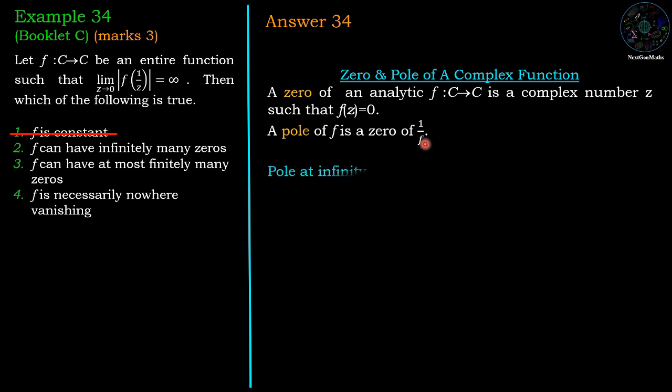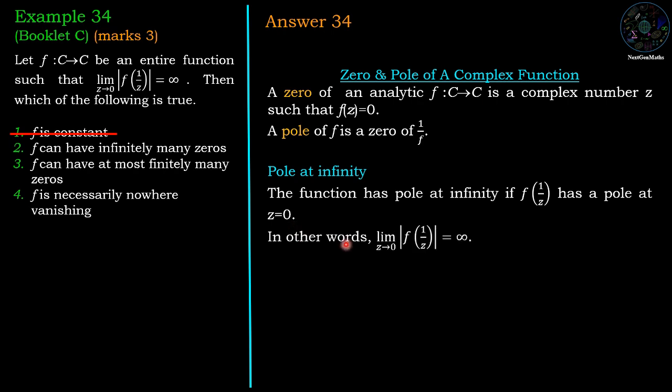There is a special definition for pole at infinity: the function f has pole at infinity if f(1/z) has pole at z = 0. In other words, in the limiting form: lim(z→0) f(1/z) = ∞.